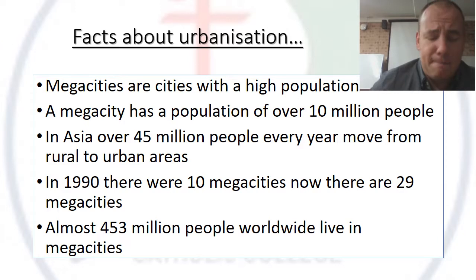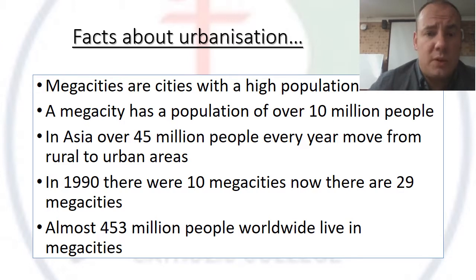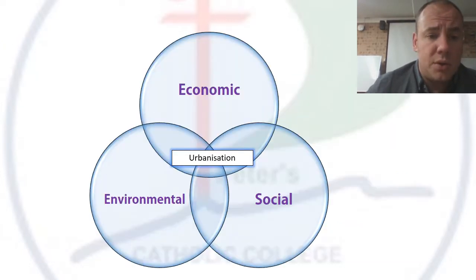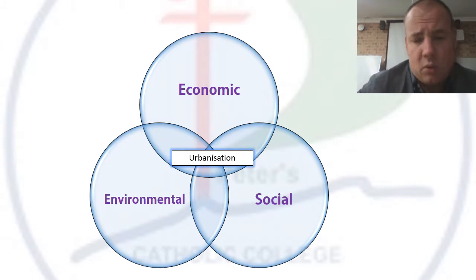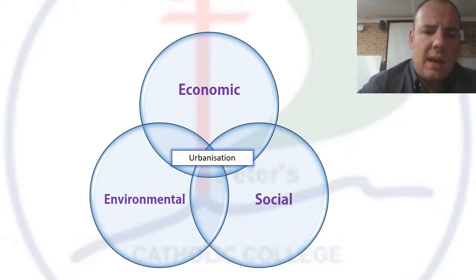Developed countries have had time to cope with this change, but countries in Asia that are rapidly developing don't have that time, and as a result we have some significant consequences. We can split these consequences into three types: economic — to do with money; social — to do with people; and environmental.